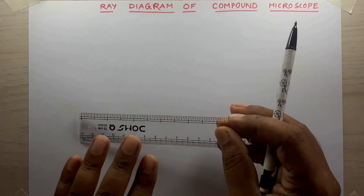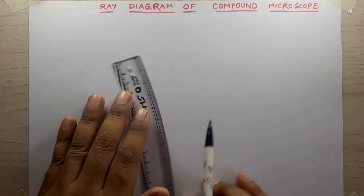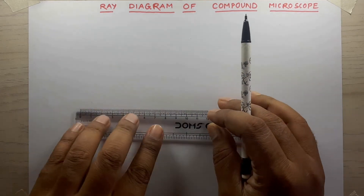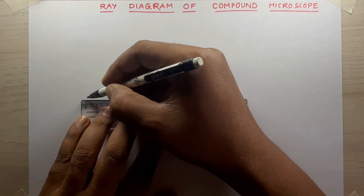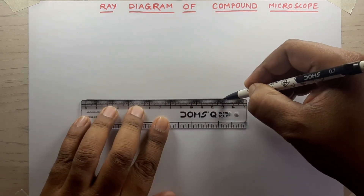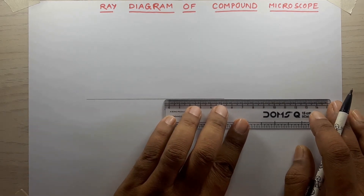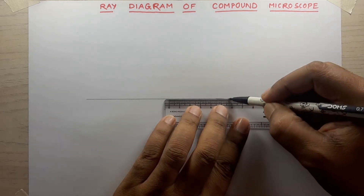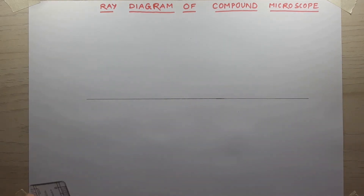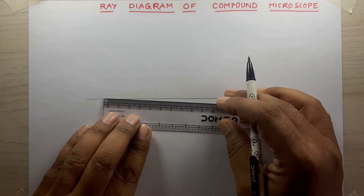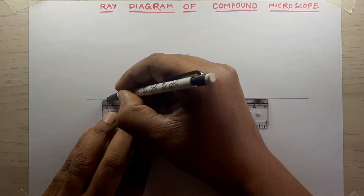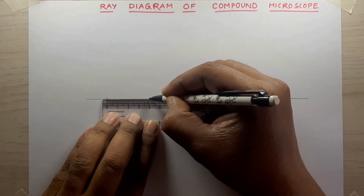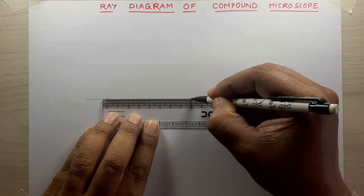Hello guys. To create the ray diagram of the compound microscope, we need to have first a straight line long enough to hold all the pieces of this diagram. Then I will mark the focal points at 0, 4, and 8 centimeters.